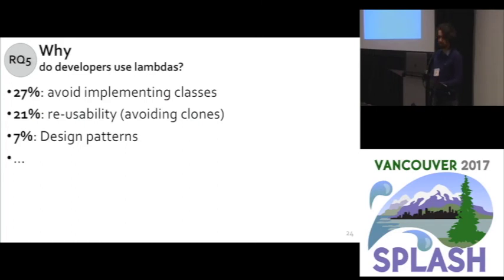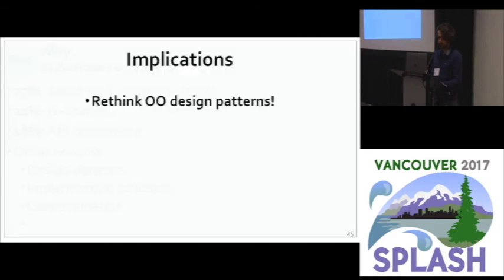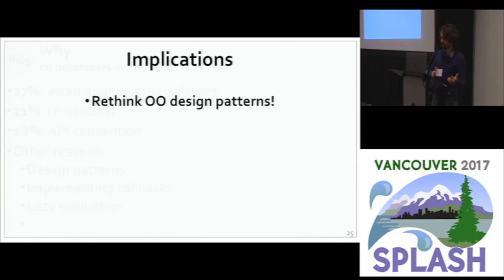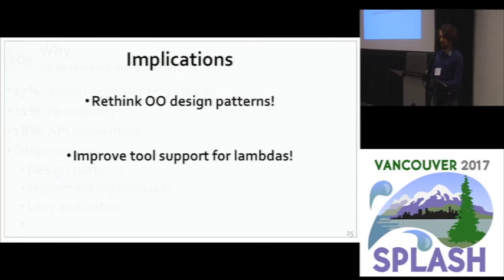There are many other reasons covered in the paper. The implication is that maybe we can rethink some of our previous knowledge about design patterns. We could teach students that they might use lambda expressions instead of building inheritance hierarchies. We also need to improve tool support so that when looking at a lambda expression, developers gain more understanding of what's happening.